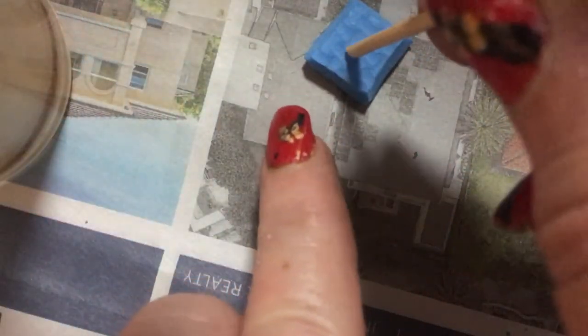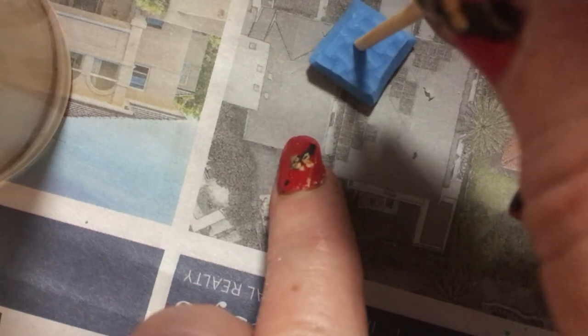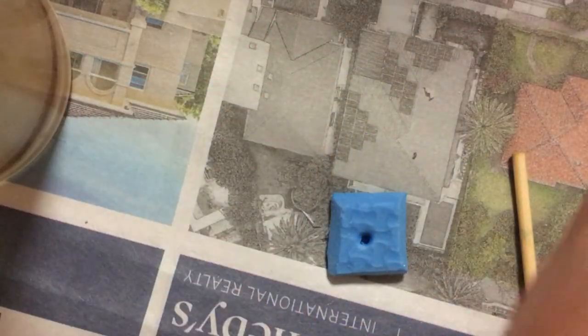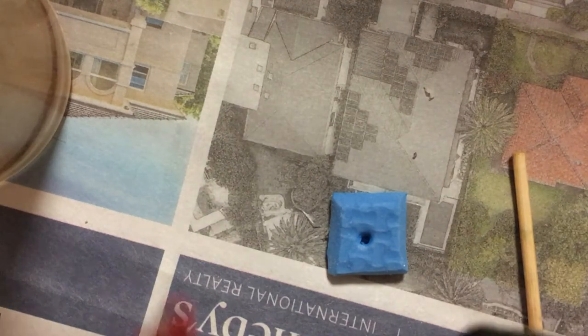Next thing you're going to do is in the center of this one, poke a hole, put the glue in, and put your little stick in.